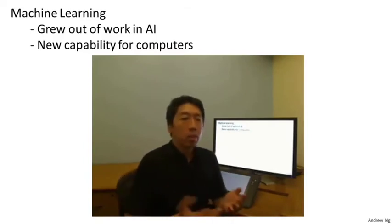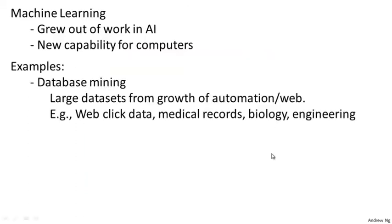Here are some modern examples of machine learning. There's database mining. One of the reasons machine learning is so prevalent is the growth of the web and automation, which means we have much larger data sets than ever before. Tons of Silicon Valley companies are today collecting web click data — also called clickstream data — and are trying to use machine learning algorithms to mine this data, to understand the users better, and to serve them better.